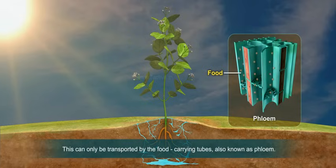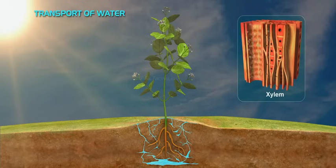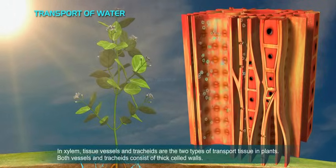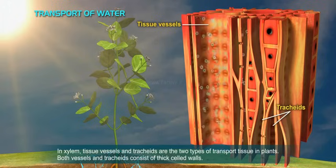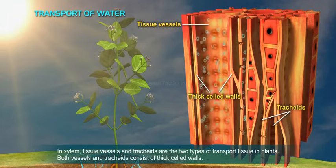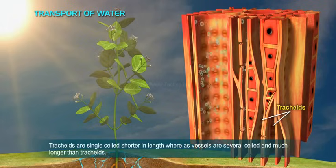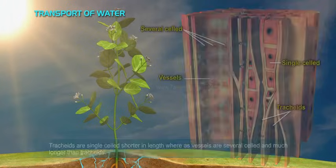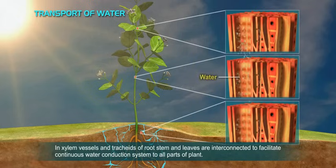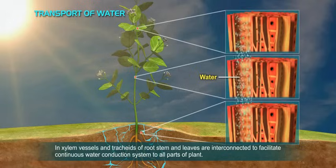Products of photosynthesis prepared in the leaves are transported to other parts of plants through the food-carrying tubes, also known as phloem. Regarding transport of water in xylem tissue, vessels and tracheids are the two types of transport tissue in plants. Both vessels and tracheids consist of thick cell walls. Tracheids are single cells and shorter in length, whereas vessels are several cells long and much longer than tracheids.